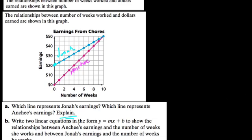Alright, two linear equations to show the relationships between earnings and number of weeks. So for Jonah, let's start with that one. We have $20 your payment plus $3 per week X. So here, Jonah equals that.